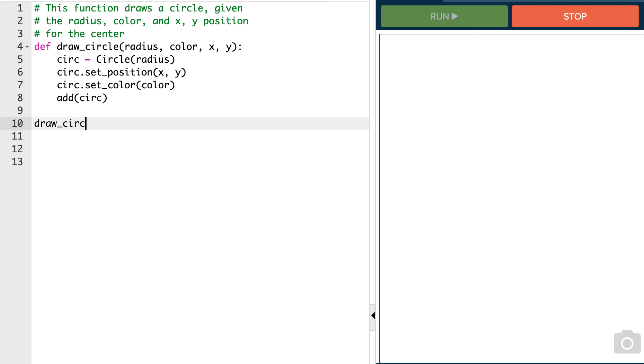So we can call it down here. We can say draw a circle, and let's create a circle with a radius of 30 colored red, and we'll put this at 50 comma 50.